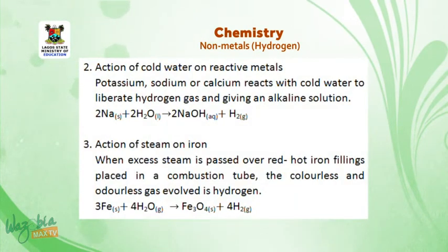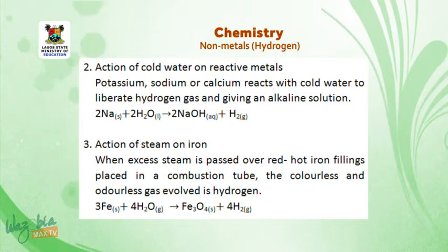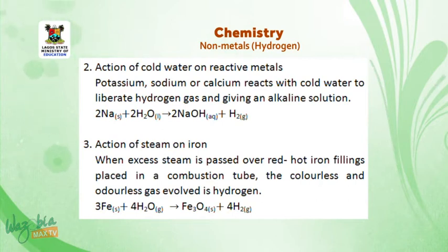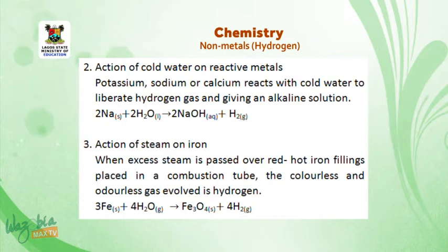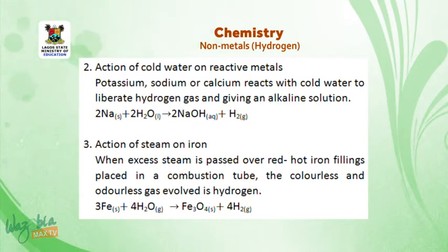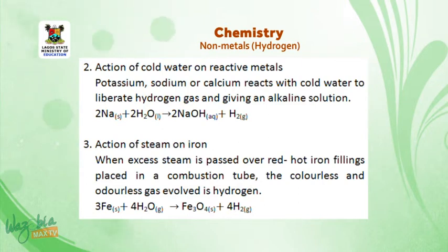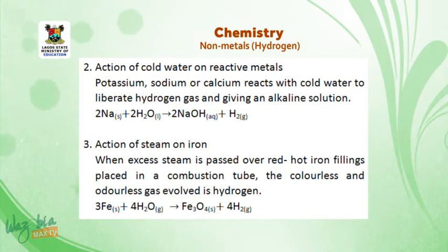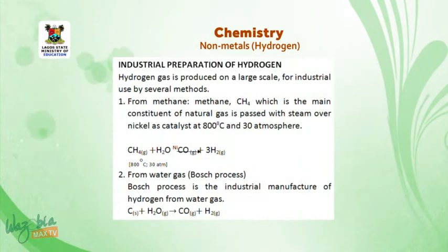Method 2: Action of cold water on reactive metals. Potassium, sodium or calcium react with cold water to liberate hydrogen gas, giving an alkaline solution. In the equation: sodium reacting with water gives sodium hydroxide and hydrogen gas. Method 3: Action of steam on iron. When excess steam is passed over red-hot iron filings placed in a combustion tube, the colourless and odourless gas evolved is hydrogen. The equation shows iron (solid) reacting with water (gas) to give iron(II,III) oxide and hydrogen gas.